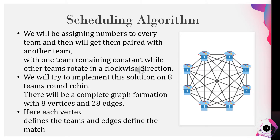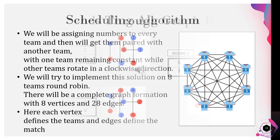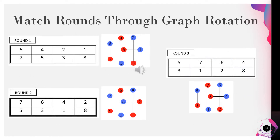Scheduling algorithm: we assign numbers to every team and then pair them with another team, with one team remaining constant while other teams rotate in a clockwise direction. We implement this solution on an eight-team round robin. There will be a complete graph formation with eight vertices and 28 edges, where each vertex defines a team and each edge defines a match. Here is the pictorial representation of match rounds through graph rotation.